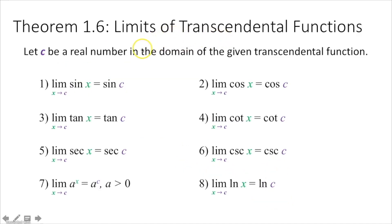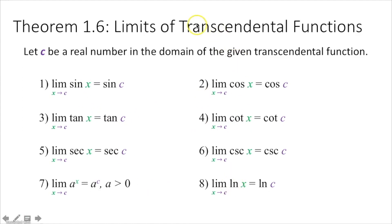Limits of transcendental functions: let c be a real number in the domain of the given transcendental function. The limit as x approaches c of some transcendental function in terms of x — to find the limit, all you have to do is take that c and plug it in for x. That's all this says. So anytime you have a transcendental function, an exponential function, or a trig function, just take that c value, plug it in the function for x, and then simplify it, and you end up getting your limit.